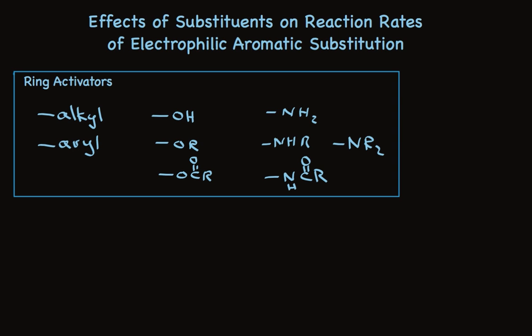Here are the ring-activators. The alkyl and aryl substituents donate electrons by induction. Each of the other substituents has an atom, oxygen or nitrogen, attached directly to the ring that has at least one unshared pair to donate by resonance. The carbonyl group attached to oxygen or nitrogen has a moderating effect.